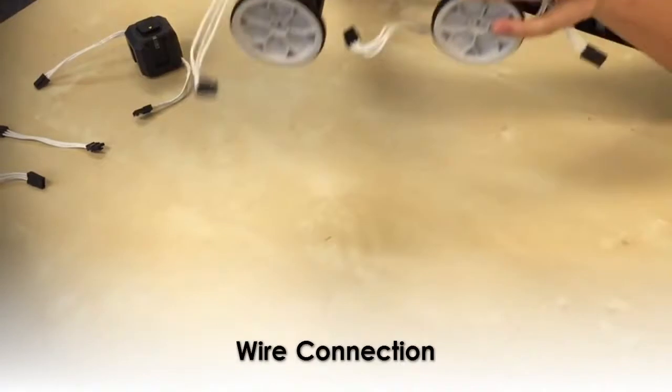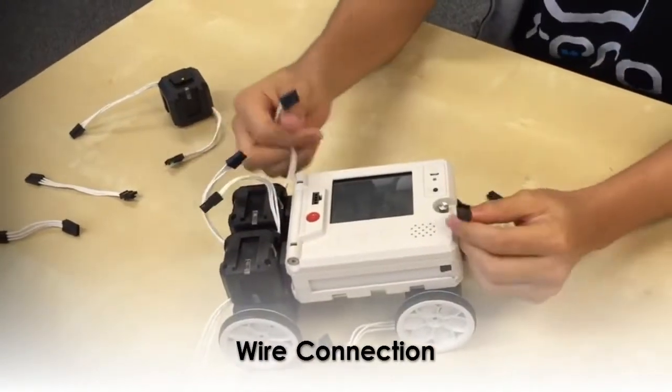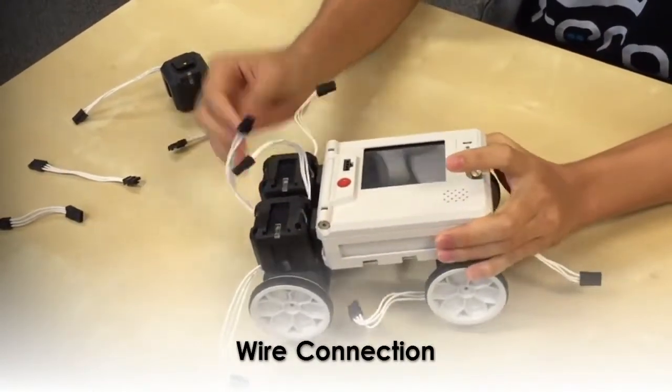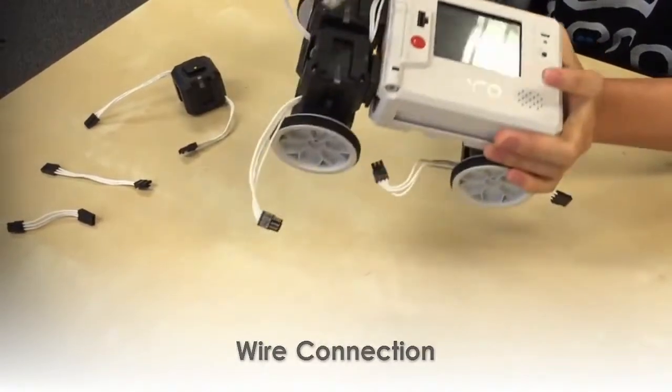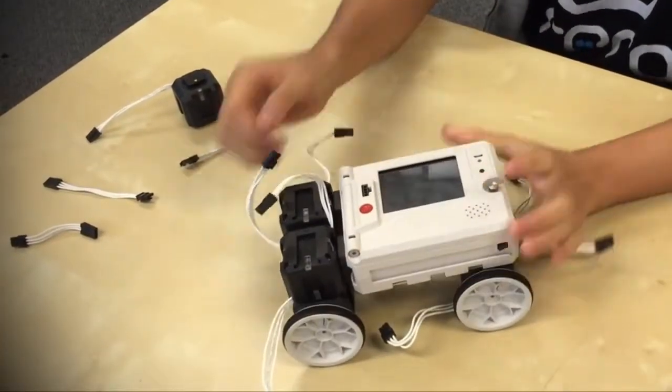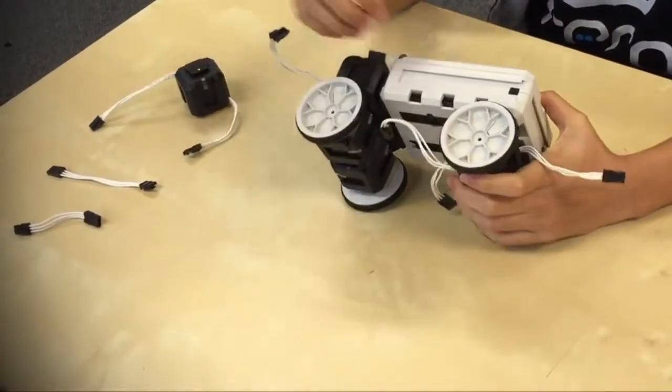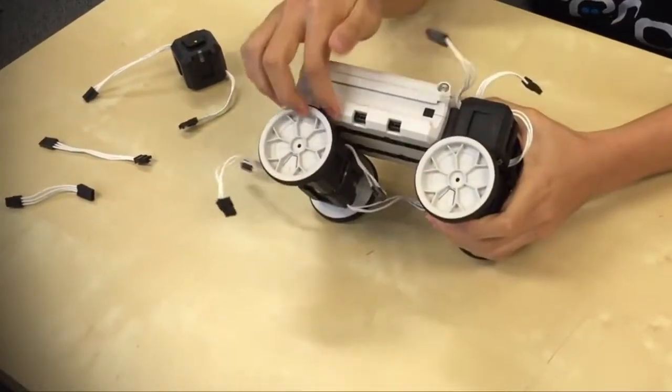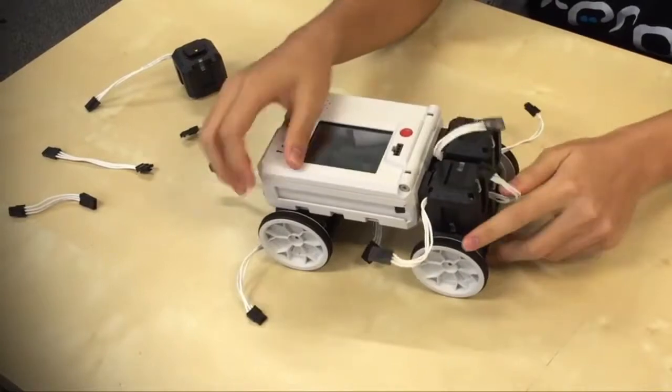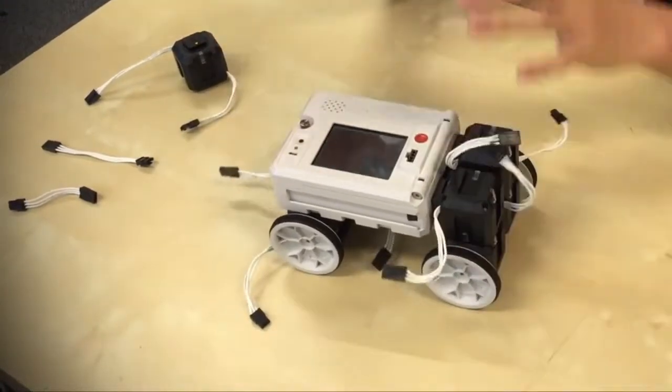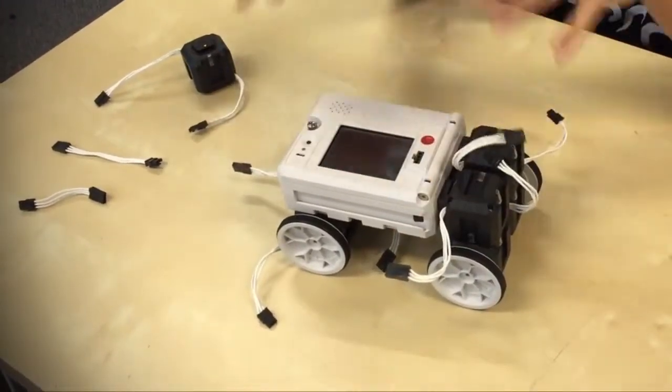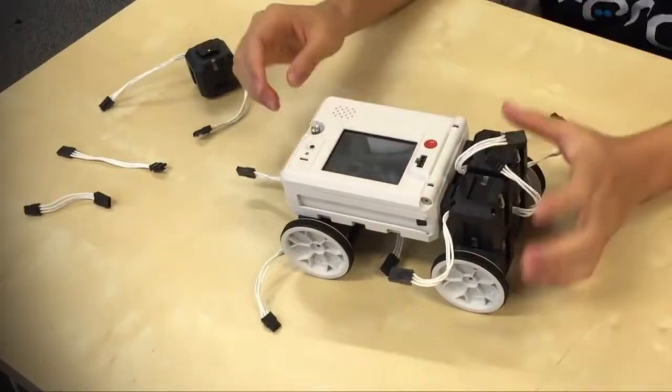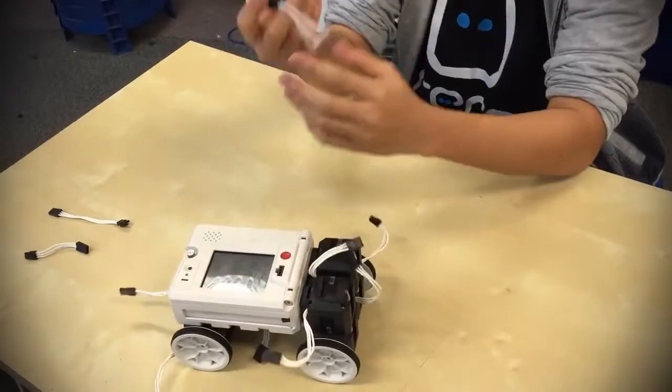So before your robot can move, we need to put in the wires. So what we have to do here is make sure that all the servos are connected to the controller. There are six ports on the controller. One, two, three, four, five, six. Now the idea is to make sure that all the servos are connected to the controller so the controller can send commands to the motor so that they can move. Now let's have a look at the servo.